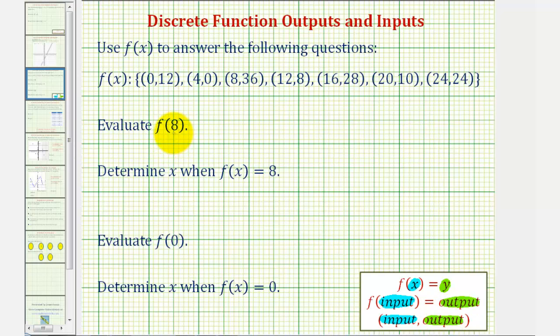So to evaluate f of 8, 8 is the input or x value, so we'll look through these ordered pairs and look for an x coordinate of 8, which is here. Notice how when the input or x value is 8, the output or y value is 36. And therefore, f of 8 equals 36.